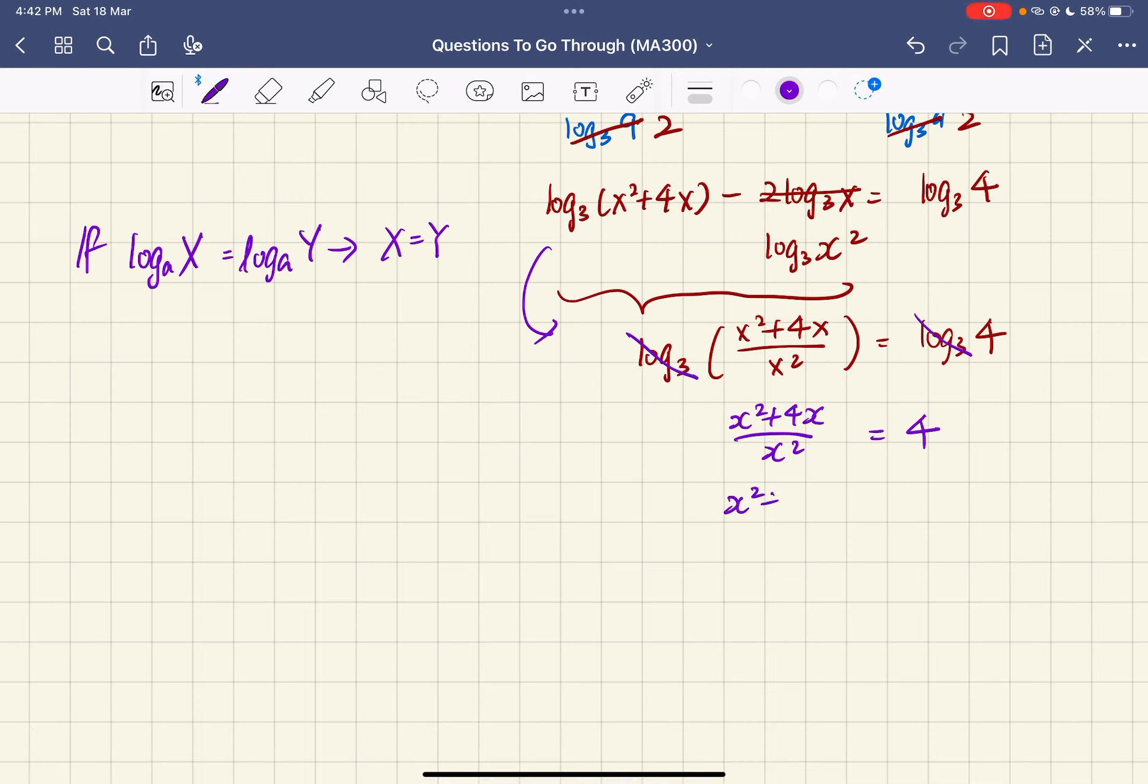x squared plus 4x. Multiply by x squared on both sides, you have 3x squared minus 4x equals 0. Factorizing, x equals 0 or x equals 4 over 3.